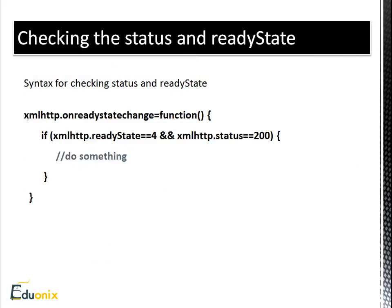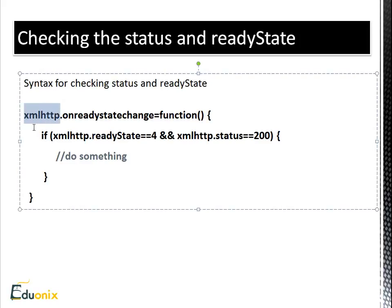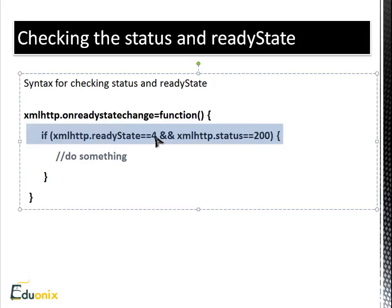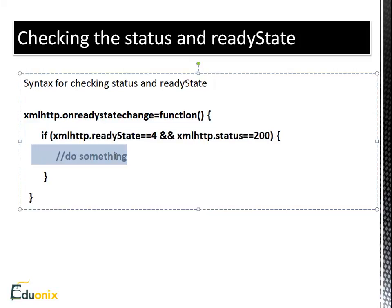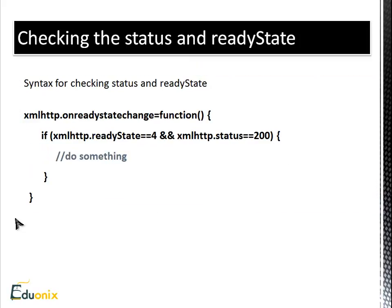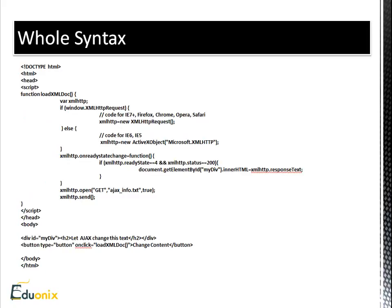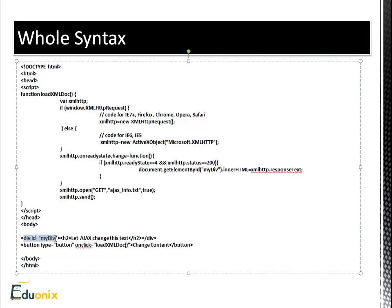This is the syntax for a very simple script that involves AJAX, from W3Schools. We have a div with the ID of myDiv and an H2 tag with some text inside. Under that H2 tag, we have a button which, when clicked, uses an event handler to run the function loadXMLDoc. The function is defined above that.